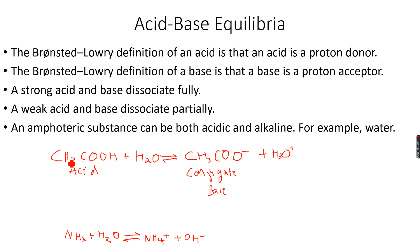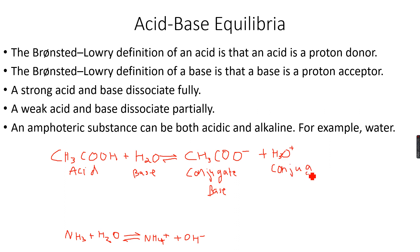So if ethanoic acid is an acid, then the ethanoate ion is called its conjugate base, because the ethanoate ion can accept an H⁺ ion and form back CH3COOH. Similarly, if water is a base — because it can accept H⁺ ions — then the hydronium ion is its conjugate acid, because the hydronium ion donates H⁺ ions. So this is the base and this is its conjugate acid.